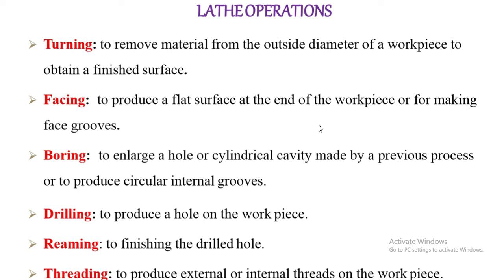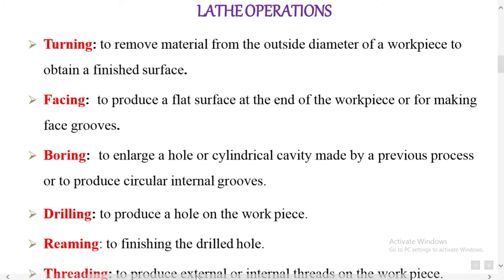First operation — turning. To remove the material from the outside diameter of a workpiece to obtain a finished surface is called turning. We remove unwanted material from the outside diameter, meaning we reduce the diameter to obtain a finished surface. Next, facing — to produce flat surfaces at the end of a workpiece or for making face grooves is called facing. Next, boring — to enlarge a hole or cylindrical cavity made by a previous process, or to produce circular internal grooves, is called boring. Drilling — to produce a hole in the workpiece is called drilling. Reaming means finishing a drilled hole.